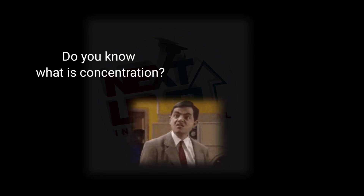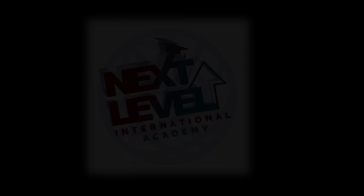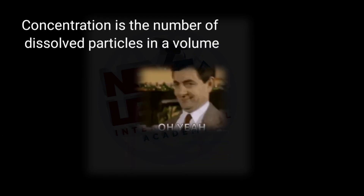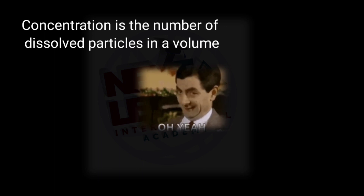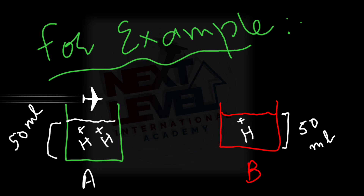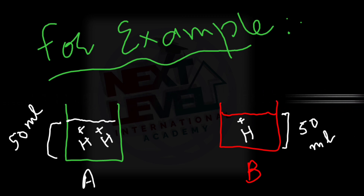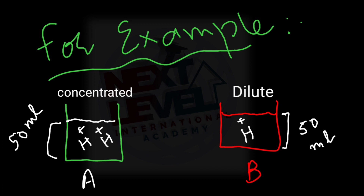Concentration in chemistry means dissolved particles in a volume. For example, we have two beakers, A and B, both with the same volume of 50 ml. Beaker A has more hydrogen ions compared to B, so we say A is concentrated and B is dilute.